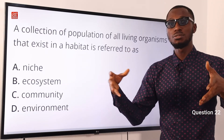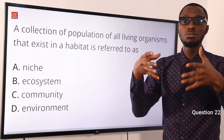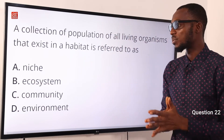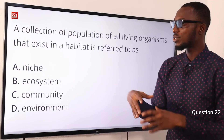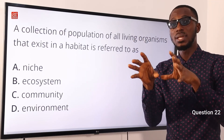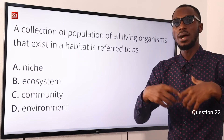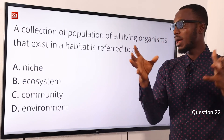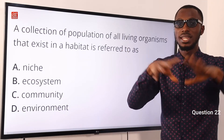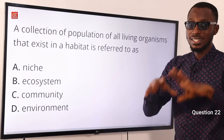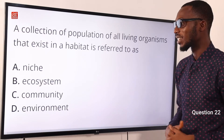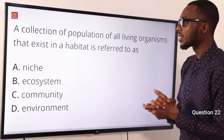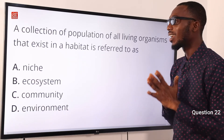Ecosystem means you are bringing into scope the biotic factors — those are the living things — and the abiotic factors in a particular setting. Niche is that part of the habitat where a particular organism lives and how it interacts with that environment. Environment refers to the external surrounding. So the correct option here is option C — community is a collection of populations of all living organisms that exist in the habitat.